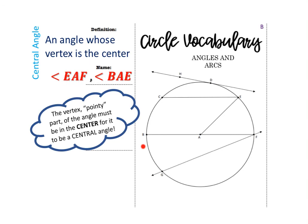Looking at our diagram, angle EAF is a central angle because the vertex, A, is the center of the circle. You can also look at angle BAE, which is right here — that's also a central angle because A is the vertex and that's the center of the circle.